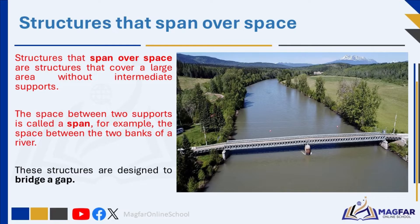Structures that span over space are structures that cover a large area without intermediate supports. The space between two supports is called a span — for example, the space between the two banks of a river. The structure commonly used to span over a space is a bridge. Structures that span a space also include roofs and stadiums, and they are designed to bridge a gap and support weight over a distance.